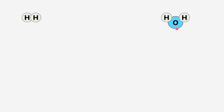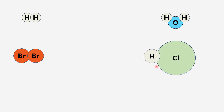When two hydrogen atoms react with each other, they give us one molecule of hydrogen, H2. On the other hand, when two hydrogen atoms react with oxygen, they give us one molecule of water, H2O. When one atom of chlorine reacts with another atom of chlorine, they give us one molecule of chlorine, Cl2. When one atom of hydrogen reacts with one atom of chlorine, they give us one molecule of HCl. When two iodine atoms react with each other, they give us one molecule of I2.